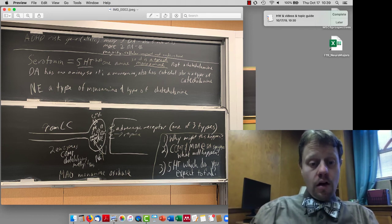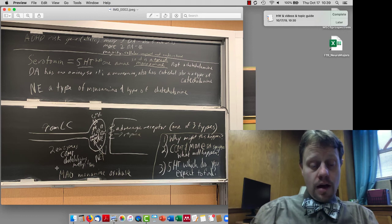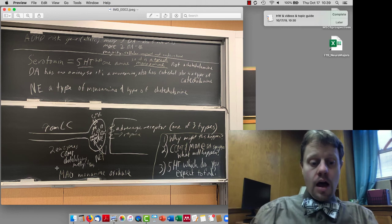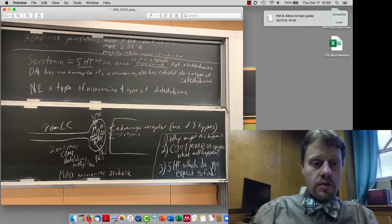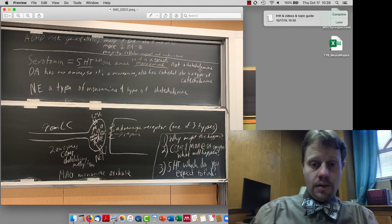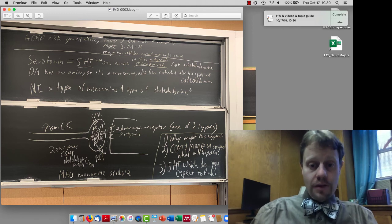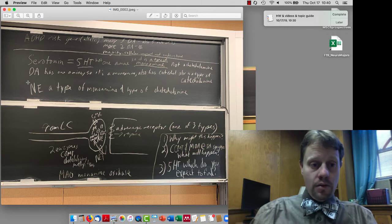Something similar happens with serotonin, although serotonin is not a catecholamine, it's just a monoamine, and so only MAO works on that. Serotonin is a type of monoamine but it's not a catecholamine. Dopamine is a monoamine and it's also a catecholamine. It belongs to both families of molecules, and norepinephrine also belongs to the family of monoamines as well as the subfamily of catecholamines.